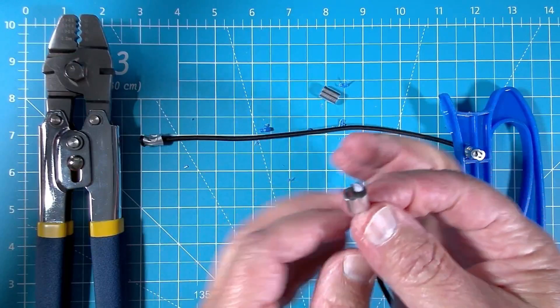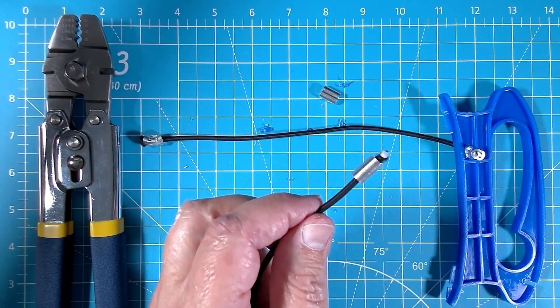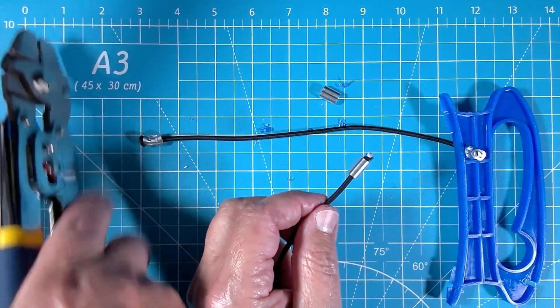These crimp connectors are for putting wire cables together, but they also work quite well on shock cord.